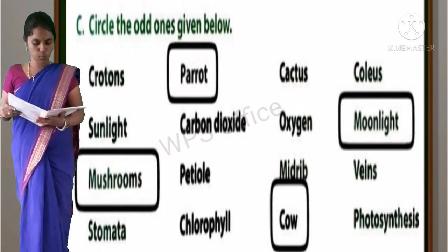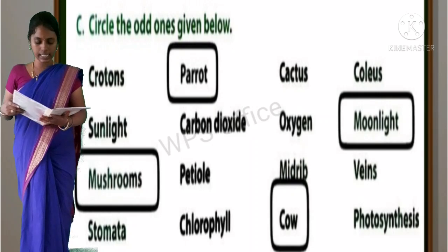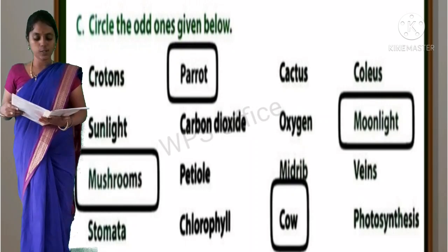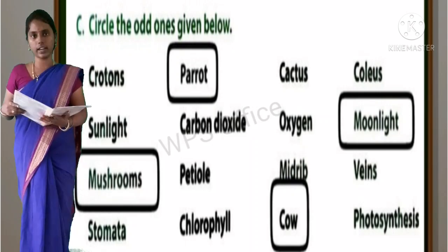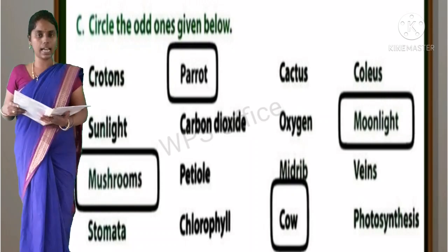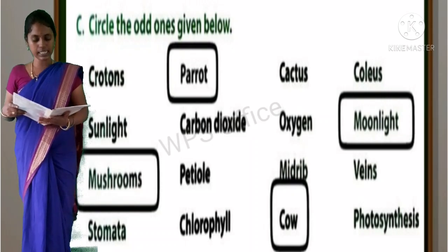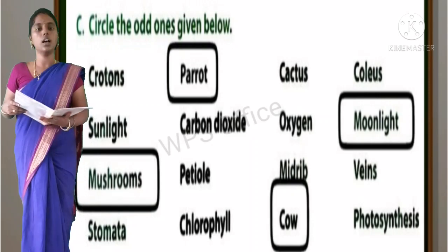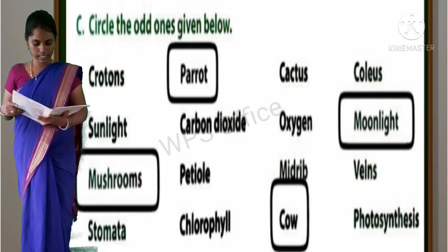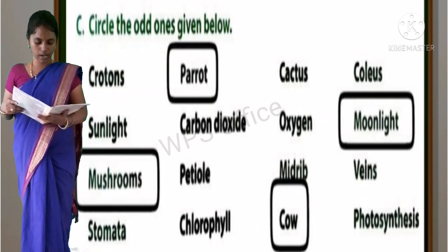First one: Crotons, Parrot, Cactus, Coleus. Parrot is the odd one because all others are plants. Second one: Sunlight, Carbon dioxide, Oxygen, Moonlight. Moonlight is the odd one.